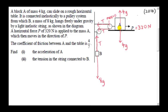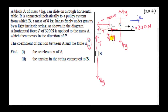Mass A moves in the direction of P, so we know the direction of its acceleration. Let's call the acceleration of A little a, pointing to the right. We must also consider the friction force on the block. Since the block moves to the right, friction opposes that motion and points left. The maximum friction force is the coefficient of friction mu multiplied by the normal force 4G, giving 4 sevenths times 4G, which equals 16G over 7.